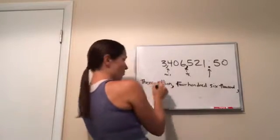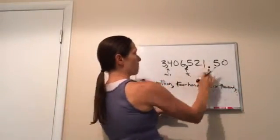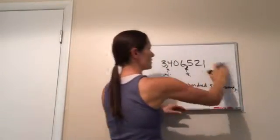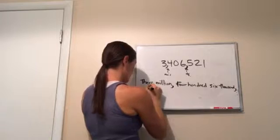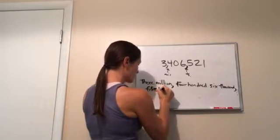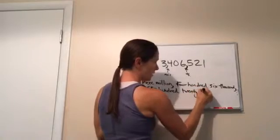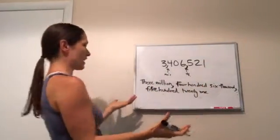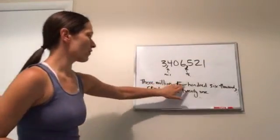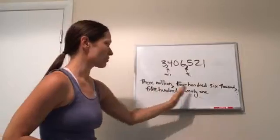So three million, four hundred and six thousand, comma. I'm going to take off the decimal because we're not working on that right now. Five hundred and twenty-one. Five hundred and twenty-one. And there's no comma, so there's no comma. And that's that. Three million, four hundred and six thousand, make sure you're putting your commas in, five hundred and twenty-one.